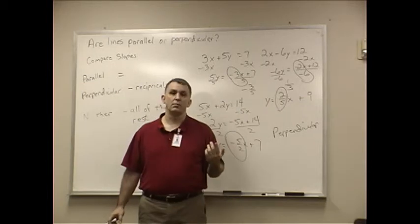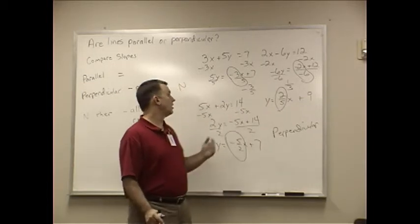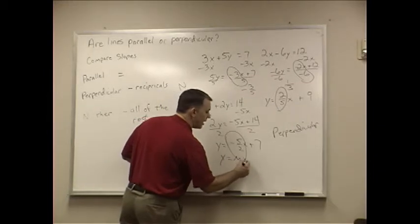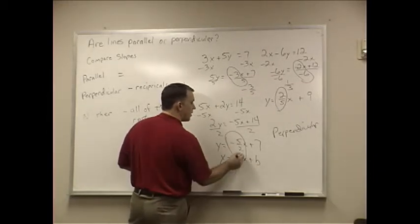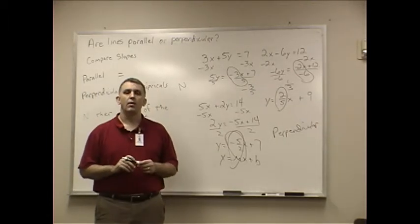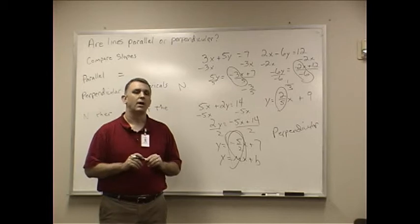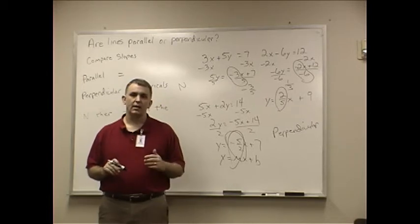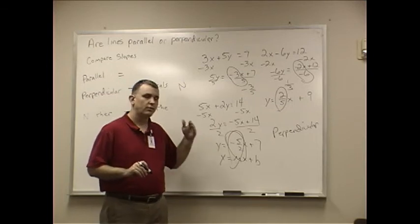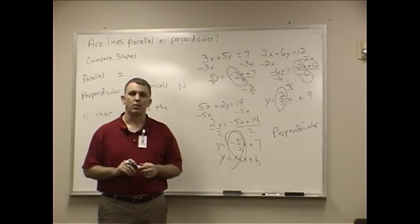It's really just some algebraic manipulation and realizing that once you get it in this form, y equals mx plus b, there you go. Your slope is in front of the x. Take your time with these. Make sure you don't make any arithmetic mistakes or algebra mistakes when you're solving your equations. It should fall right apart for you. Good luck.